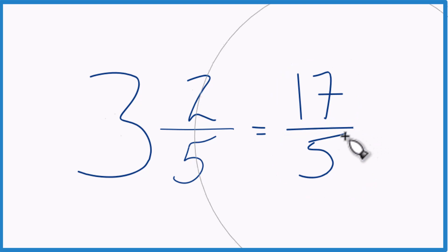So let's do that again. 3 times 5, 15, plus 2. 15 plus 2 is 17. Bring the denominator across, and you have 17 fifths.